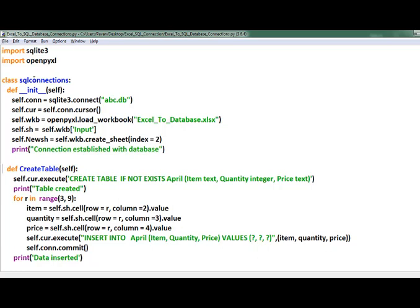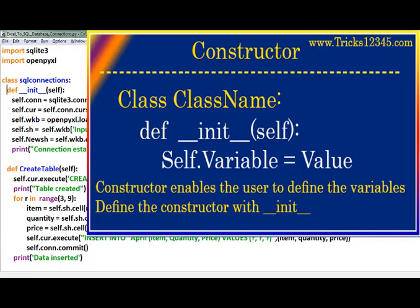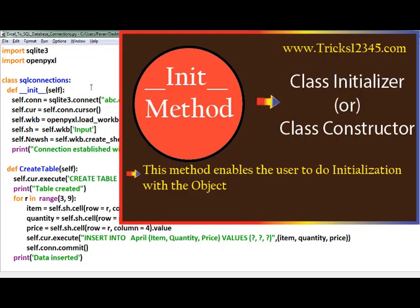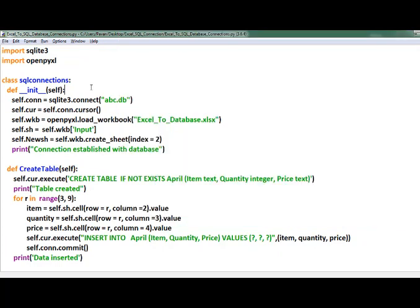First I defined a class and the class name is 'SQLConnections'. In that I created a constructor — through this constructor the user can define variables which are useful to the subsequent process of the program. To define the constructor we use __init__.